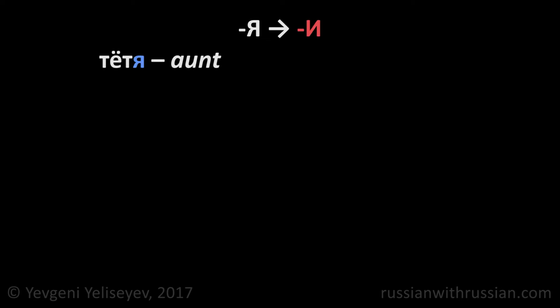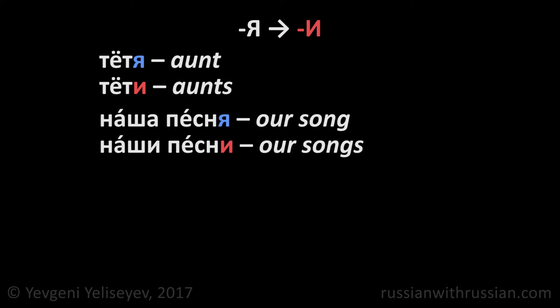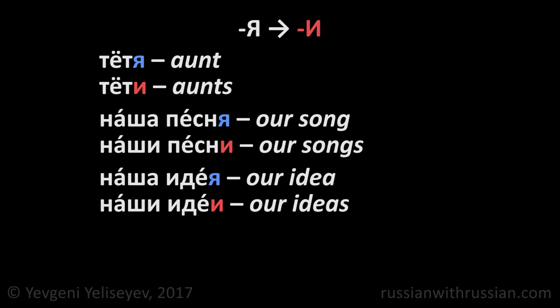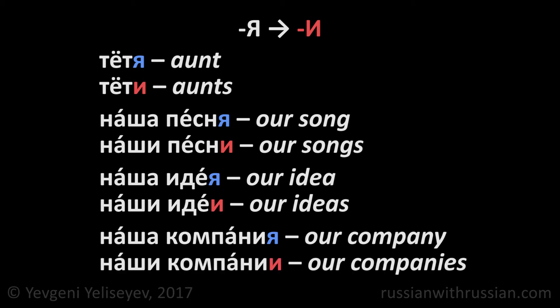If the noun ends with я, we replace this ending with и. Тётя — aunt, тёти — aunts. Наша песня — our song, наши песни — our songs. Наша идея — our idea, наши идеи — our ideas. Наша компания — our company, наши компании — our companies.